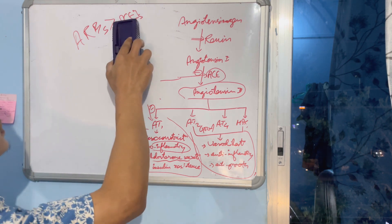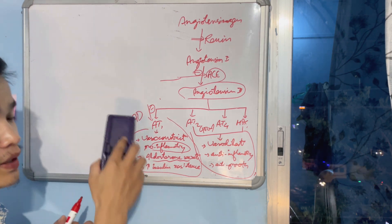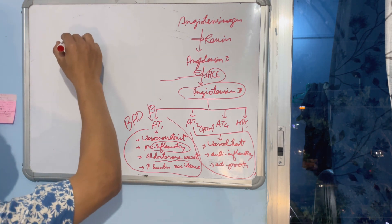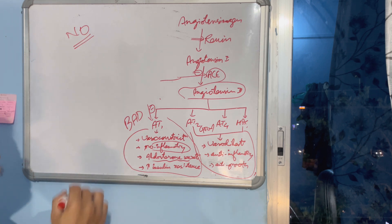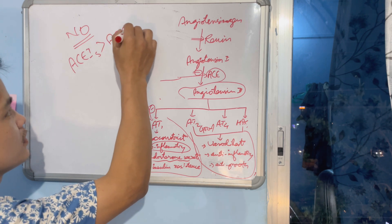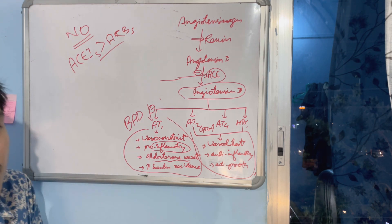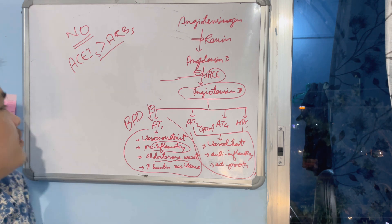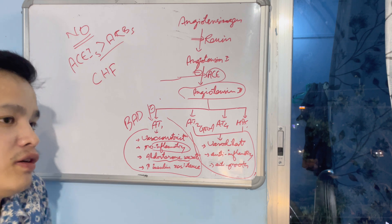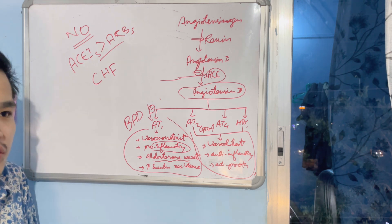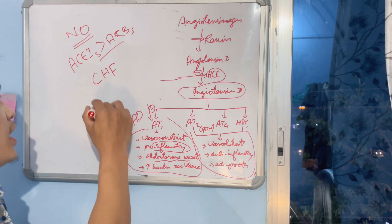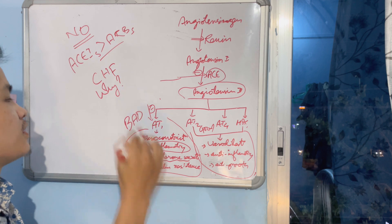Now I would like to ask you one question: do we use ARBs - I mean, do we prefer ARBs over ACE inhibitors every time? The answer is no. Sometimes ACE inhibitors are better than ARBs. Which are the conditions and why? Why do we prefer ACE inhibitors? The condition I'll tell you: CHF - congestive heart failure - or something related to your heart. If your heart is already not working properly, then we prefer ACE inhibitors. But the question is why?